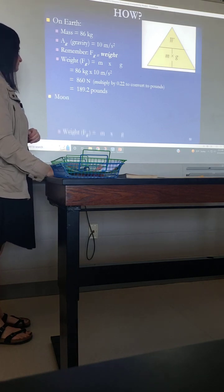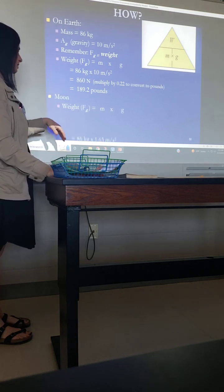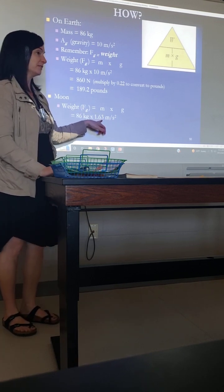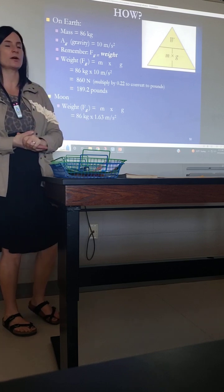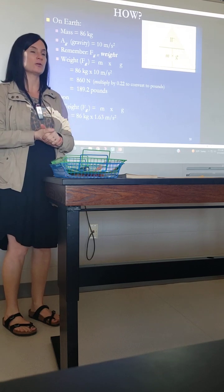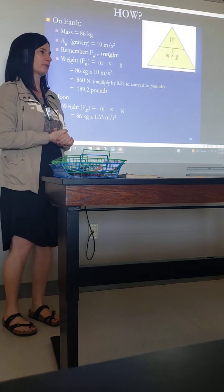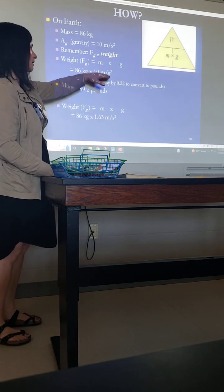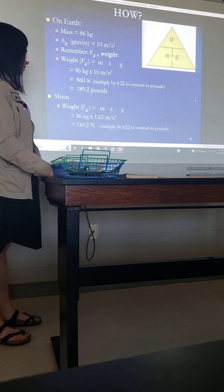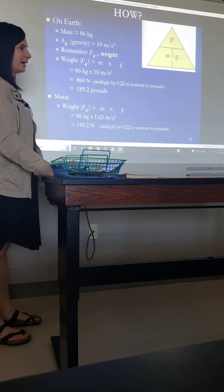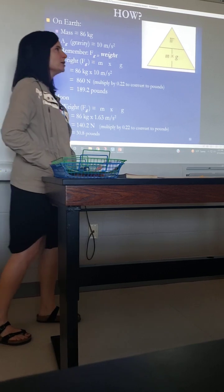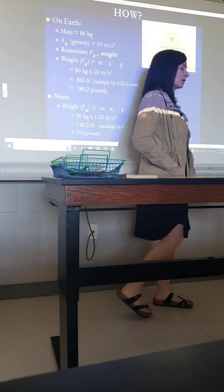Now, the Moon. Same equation, same mass, but now the acceleration is one-sixth of 10, which is 1.63 meters per second squared. So it's a much smaller pull that the Moon is exerting to accelerate something towards it. 1.63 compared to 10 here on Earth. So we do that multiplication and end up with 140.2 newtons, convert it to pounds, multiply by 0.22, and we get 30.8 pounds.